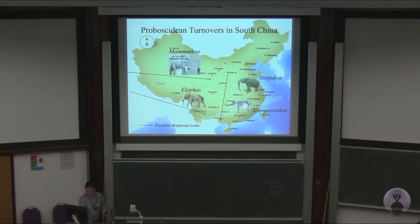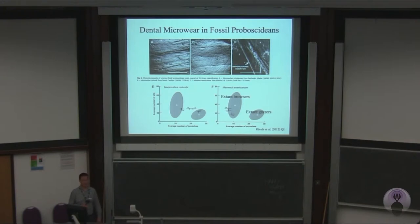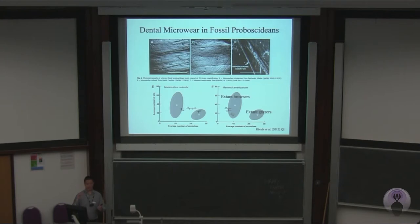Once we've introduced the taxa and environmental background, we can start talking about the methods. Dental microwear has been used as a way of determining diet of fossil mammals since the 1970s. The most conventional method reported in the literature is the one used by people like Solounias, Semprebon, and Rivals, which essentially counts the number of pits and scratches on the occlusal facets of the molars. Browsing — feeding on foliage and fruits — creates more tooth-on-tooth wear, which produces pits.